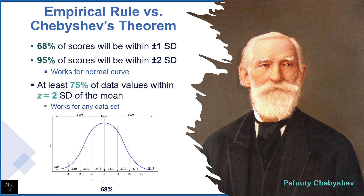We can describe the proportion of scores under a normal curve using the empirical rule. When a set of scores is normally distributed, 68% of the scores will be within one standard deviation of the mean, and 95% of scores will be within two standard deviations of the mean. This works for a normal curve. But for any curve, according to Chebyshev's theorem, at least 75% of data values will be within two standard deviations of the mean — and this works for any dataset.